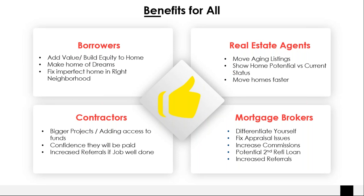Real estate agents, same for you guys — we can move those aging listings. Homes sitting 90 days, six months, that people aren't looking at because they're in disrepair, they need work, they need modernization. But you as a real estate agent or mortgage broker helping a real estate agent can show the potential of that home with a 203K — plans for a new kitchen, new siding, a new deck. Now your homes are moving faster because people see the future of that home versus what it currently is.